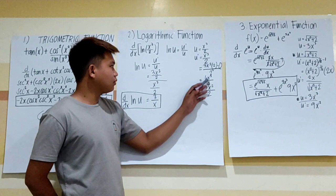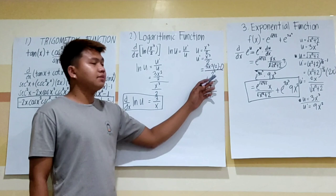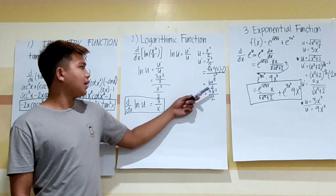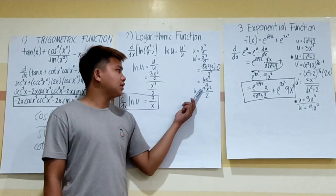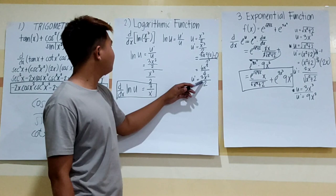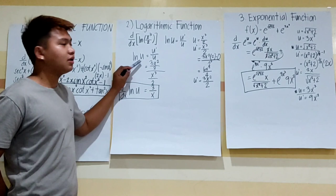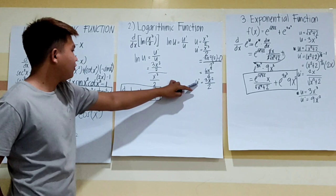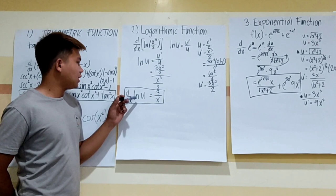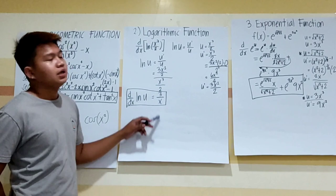So 3x² times 2 is equal to 6x² all over 4. We can simplify by dividing both sides by 2, giving us u prime equal to 3x² over 2. Now substituting into the formula: u prime is 3x²/2 all over u which is x³/2. The final answer is d/dx of ln(x³/2) is equal to 3 over x.